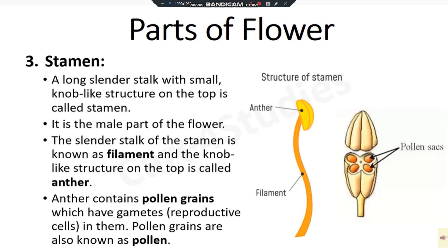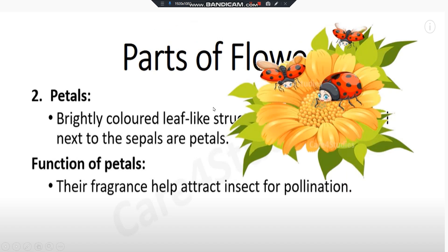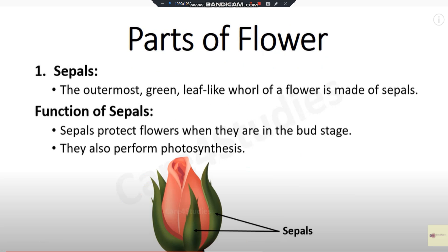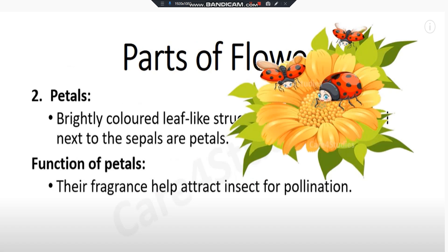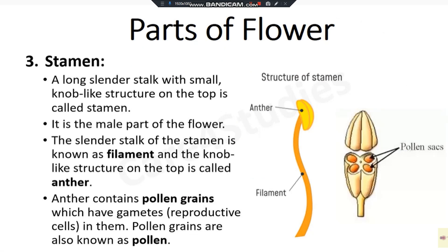Parts of flower include petals and the flower definition. Stamen is the third part of the flower. Stamen — it is the male part of a flower.